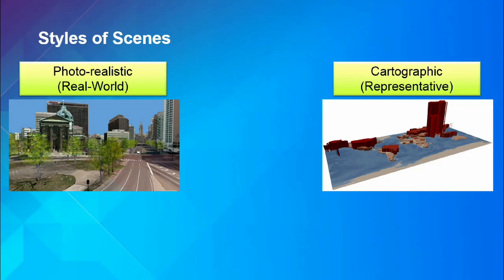Historically, people thought about scenes in two ways: photorealistic and cartographic. Photorealistic scenes need to look like the real world — real-looking buildings, imagery on the ground, trees that look like trees. The vast majority of people working in 3D — games, movies, GIS — are making photorealistic scenes. I would contend that's a mistake. We need to change the way we think about 3D and use photorealistic only when it makes sense, not always, certainly not nearly as much as we currently do.